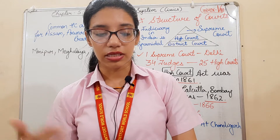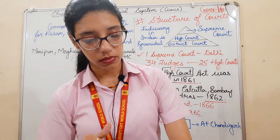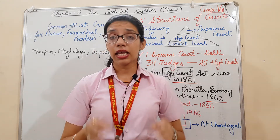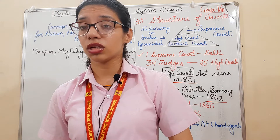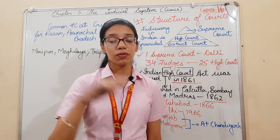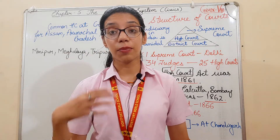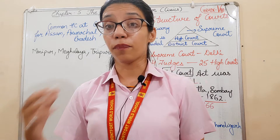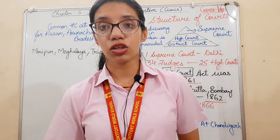There is an appellate system in the judicial system. If you are not satisfied with the district court decision, you can appeal in the High Court. If you are not convinced with the High Court decision, you can appeal in the Supreme Court, whose decision is final and binding on all courts. This system is called the single integrated judicial system — it is independent, with no fear or discrimination of any kind, and there is no arbitrariness in the judiciary.